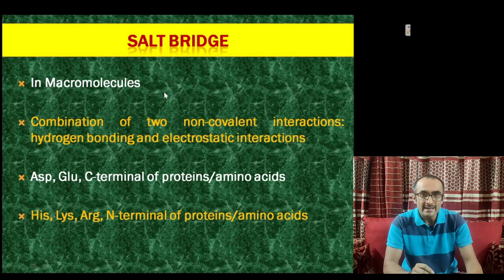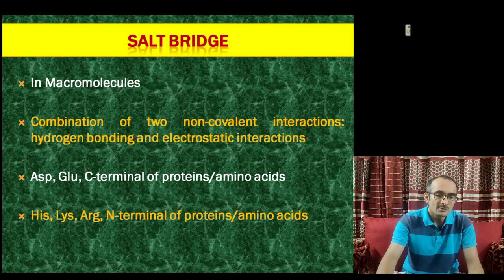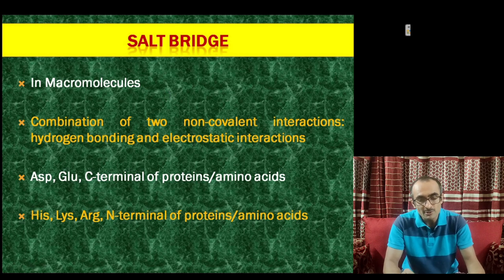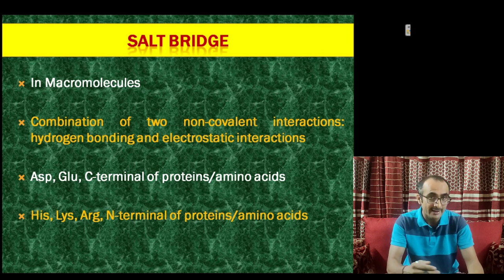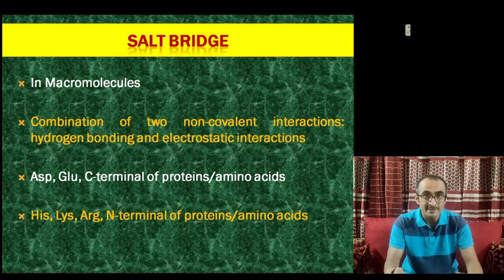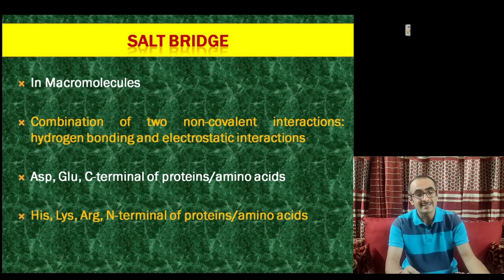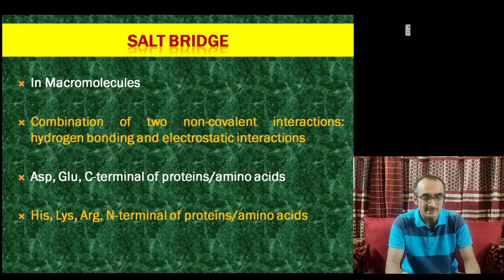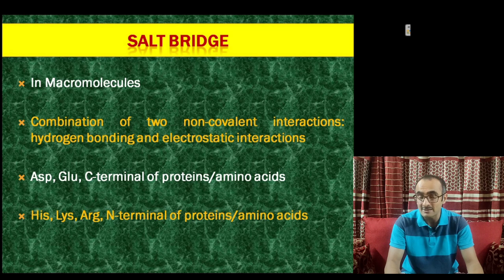Salt bridges are ionic interactions existing in macromolecules such as proteins. Salt bridges are basically a combination of two non-covalent interactions which exist simultaneously: hydrogen bond and ionic or electrostatic interaction. This interaction is found between the negatively charged side chain of acidic amino acids like aspartic acid or glutamic acid, or the C-terminal of a protein, and the positively charged side chain of basic amino acids like histidine, lysine, or arginine, or the N-terminal of a protein. This interaction between a basic and an acidic amino acid gives rise to a salt bridge.